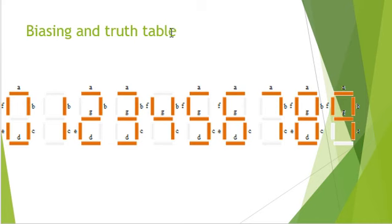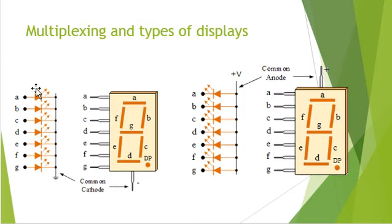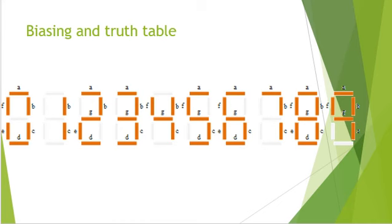Now let's talk about biasing and the truth table. Depending upon the decimal digit to be displayed, the particular set of LEDs is forward biased. For instance, to display the numeric digit 0, we need to light up 6 of the LED segments corresponding to A, B, C, D, E, and F. Thus, the various digits from 0 to 9 can be displayed using a 7-segment display.